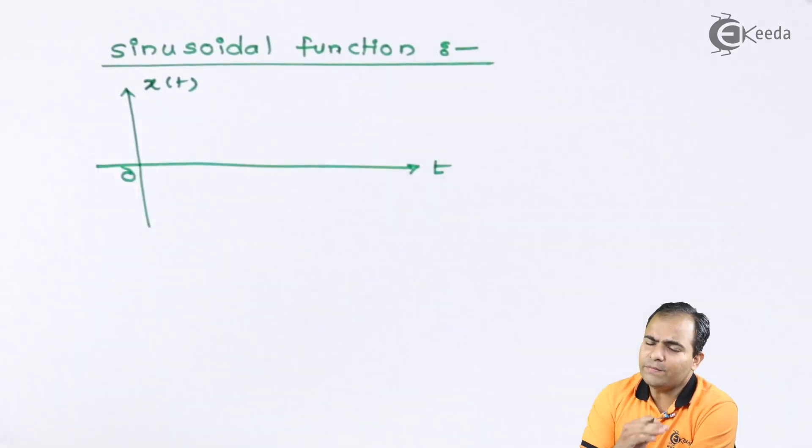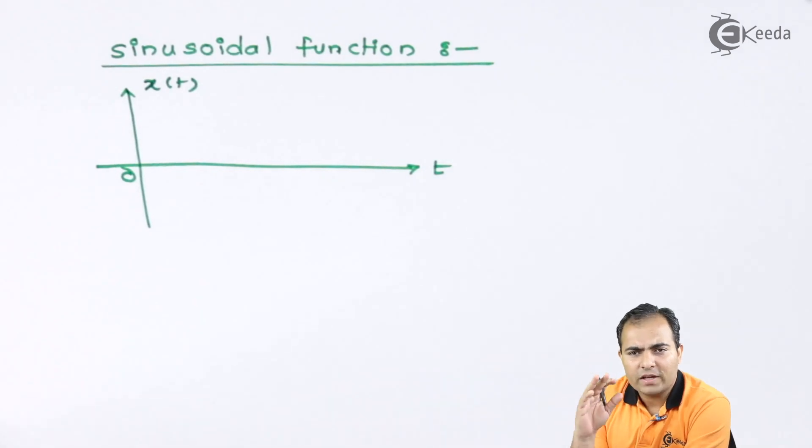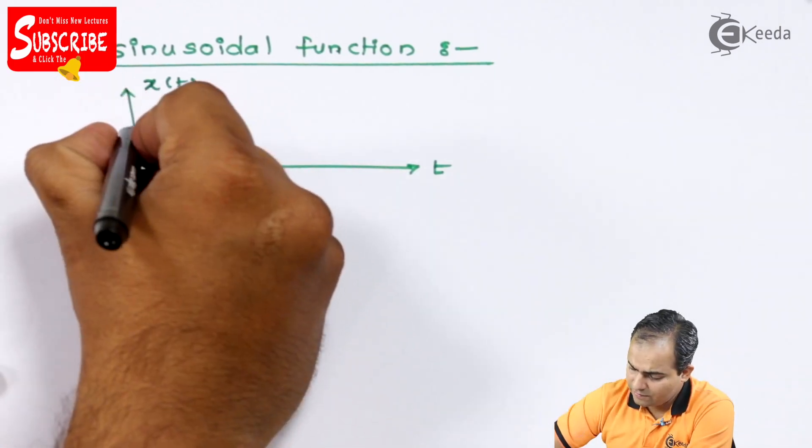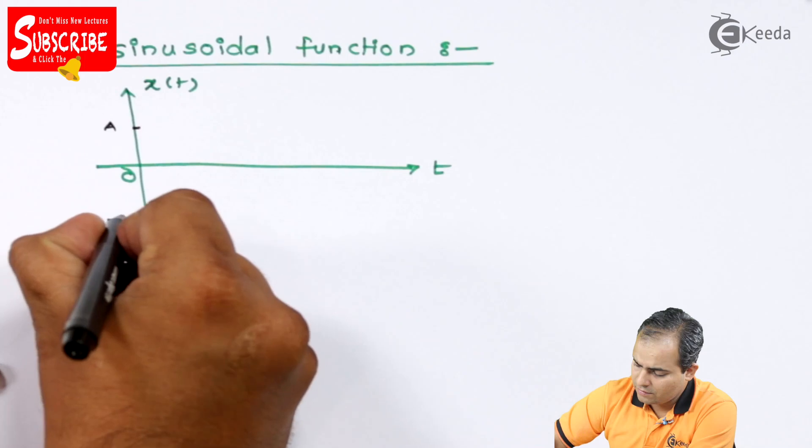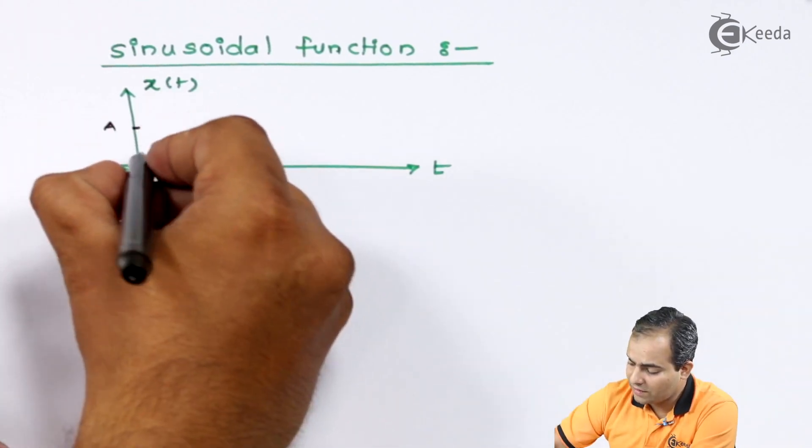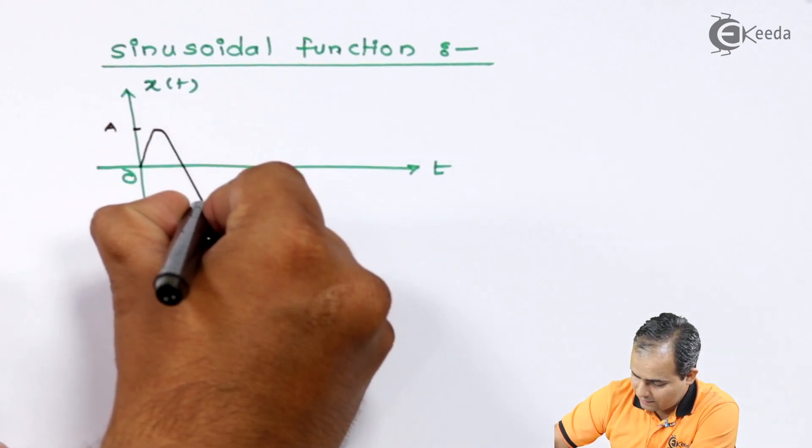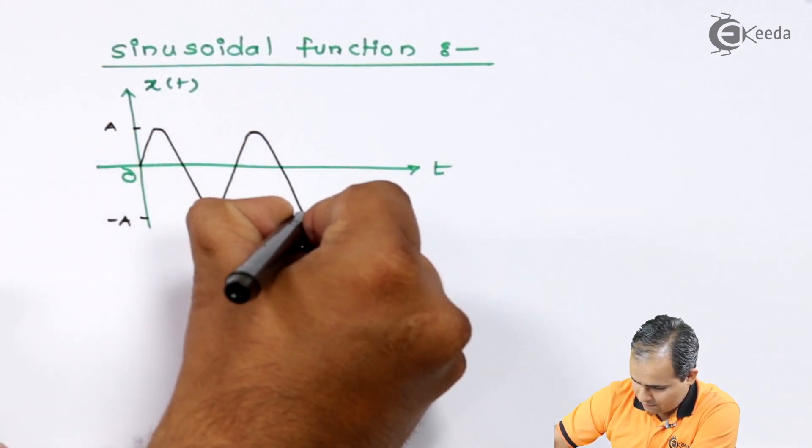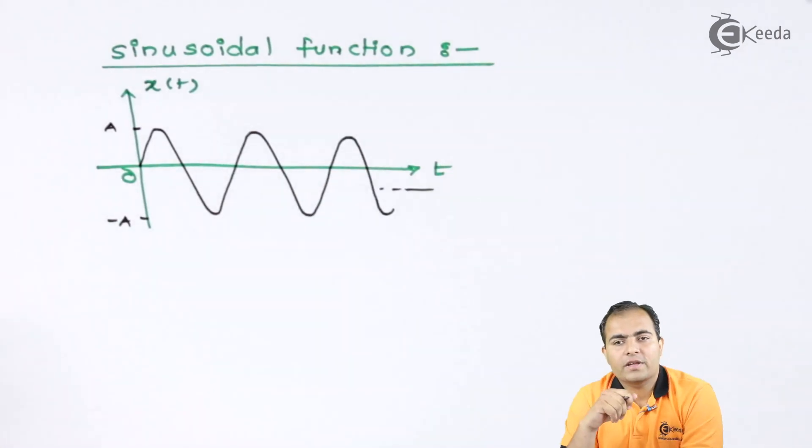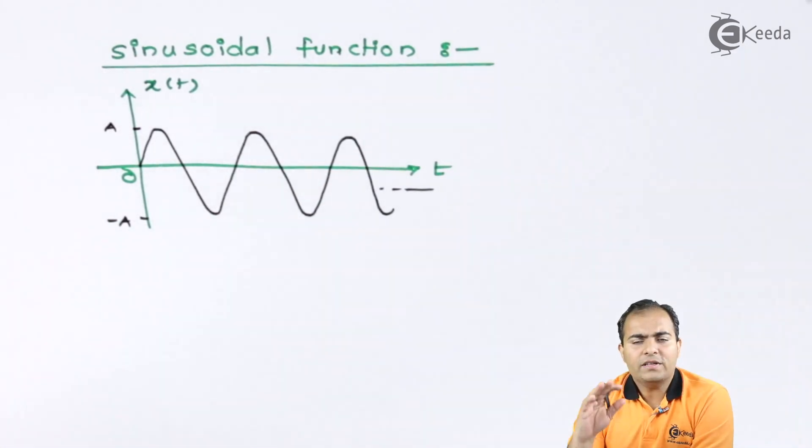Sinusoidal means what? It is a simple sine wave, and its amplitude, let's say A. How to plot the sine wave is like this, and so on. This is the sine wave, simple sine wave.